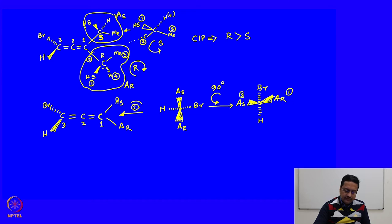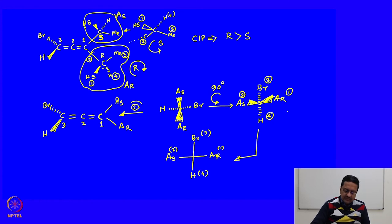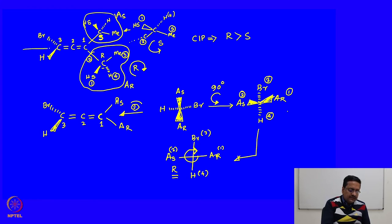After rotating 90 degrees, based on the priorities we know that A R has higher priority over A S. So this is 1, that is 2, this is 3 and hydrogen is 4. Let us draw the Fisher projection: A R with priority 1, A S with priority 2, bromine with priority 3 and hydrogen with priority 4. Here, 1 to 2 to 3 is clockwise. So the absolute configuration is R. The absolute configuration of this chiral axis is found to be R.